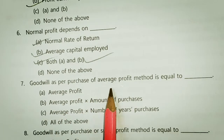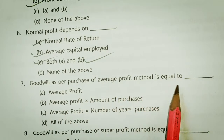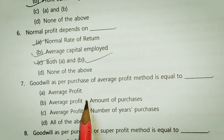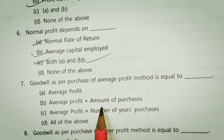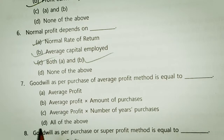Goodwill by purchase — average profit method is equal to: average profit, average profit multiplied by the amount of purchase, or average profit multiplied by the number of years of purchase.